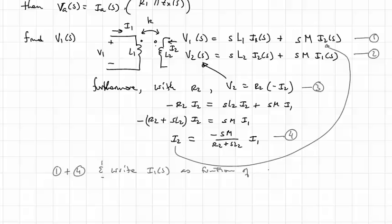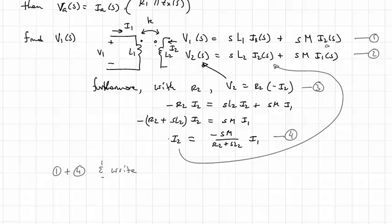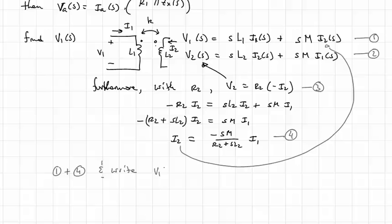Now we can take 1 plus 4 and write I1 as a function of, I guess I'm going to write V1. Sorry, let me take that and try that again. I2 is going to get plugged in up here as I had before. So taking 1 and 4, we're going to write V1 as a function of I1.